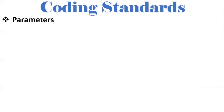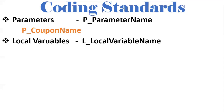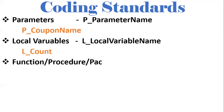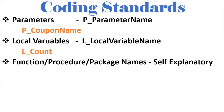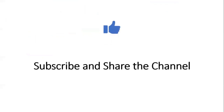These are some coding standards to follow when writing real-time projects. Parameters should follow the naming convention p_parameter_name in camelCase, for example p_coupon_name. Local variables should be named like l_count. Function, procedure, or package names should be self-explanatory; for example, coupon_validation clearly indicates it is related to coupon code validation. If you like the content, subscribe and share the channel. Thank you for watching.